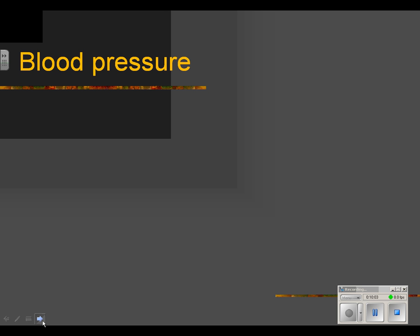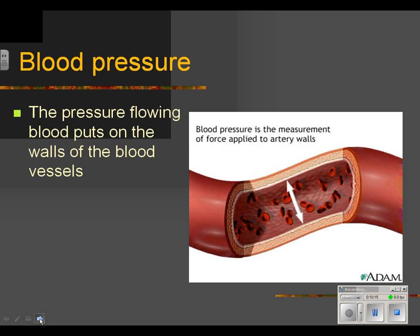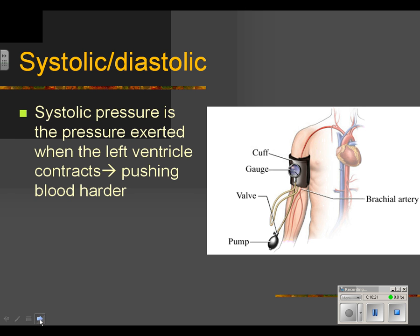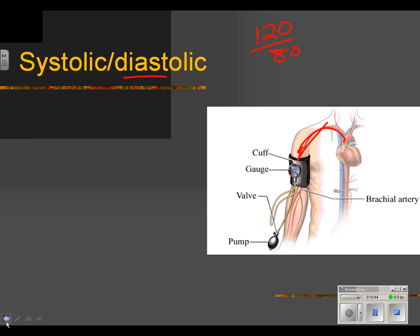One of the things we use to talk about blood flow in the body is blood pressure — the measurement of force applied to artery walls. There are two measures: systolic pressure, which is the top number, and diastolic pressure, which is the lower number. Systolic pressure is the pressure exerted when the heart pumps and pushes the blood — faster-flowing blood puts more pressure on the walls of the vessels.